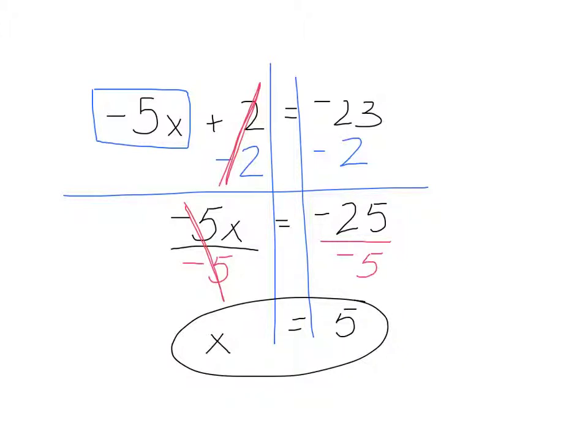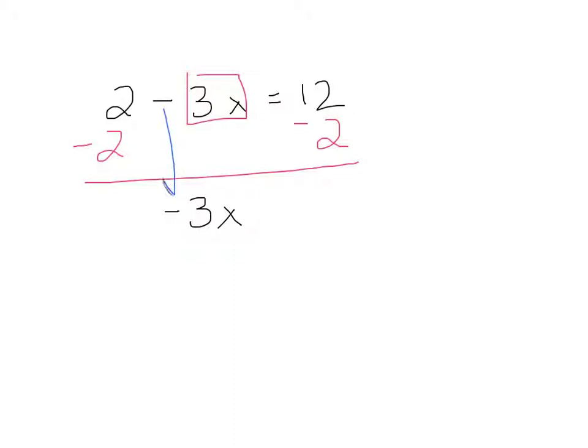Be careful with the negatives, particularly in the situation if I gave you something like 2 minus 3x is equal to, let's say 12. I still need to subtract the 2, because I need to think about it as 2 minus what would equal 12. In this case, I'm going to have negative 3x. I need to bring down the subtraction sign as a negative with the 3x.